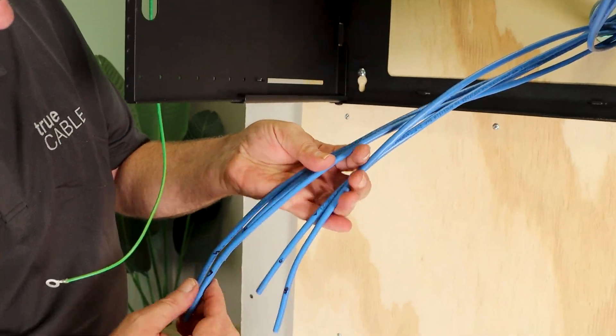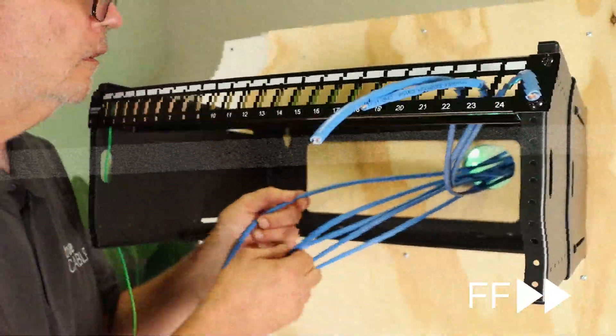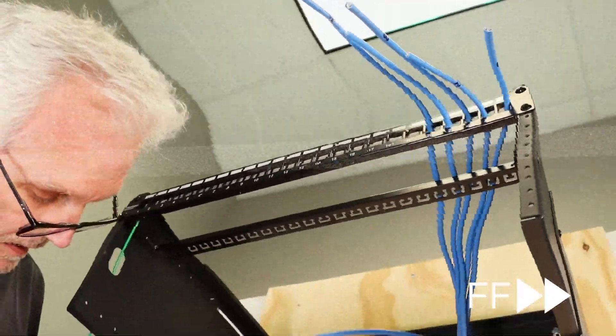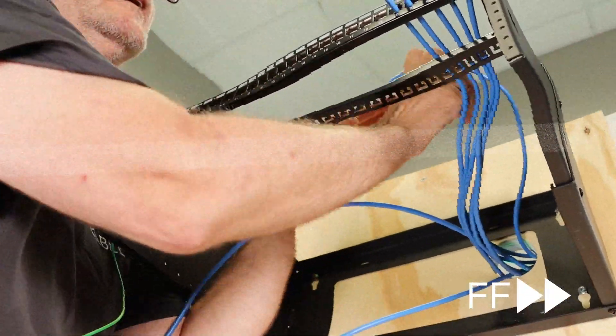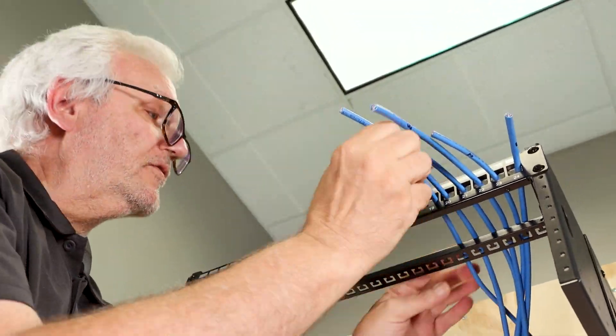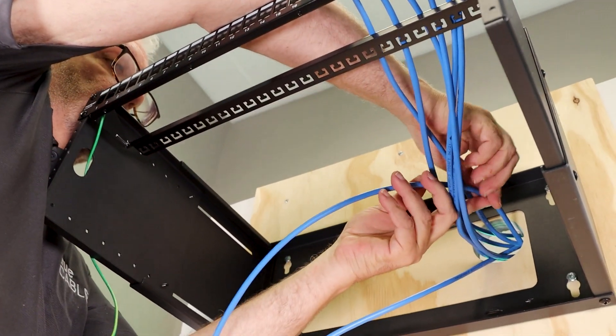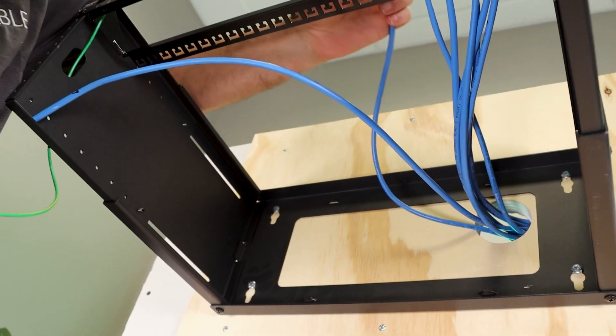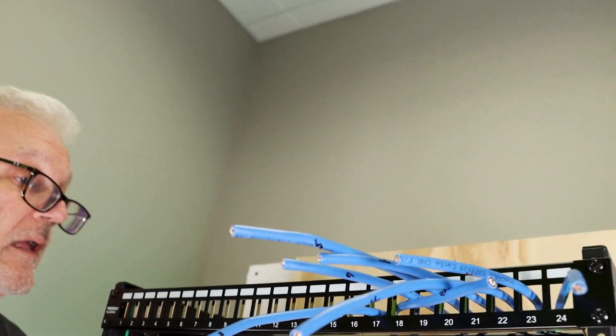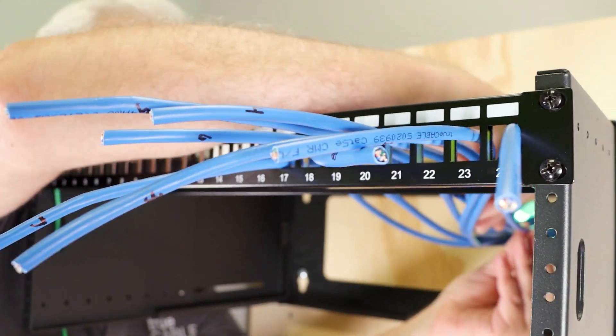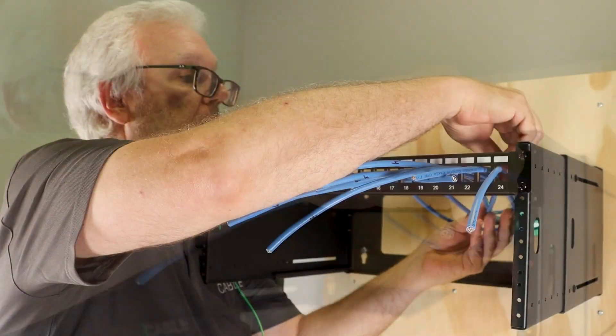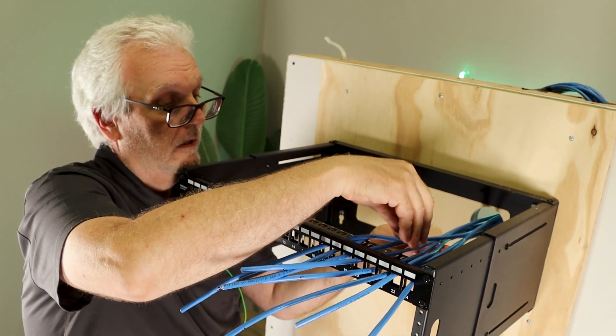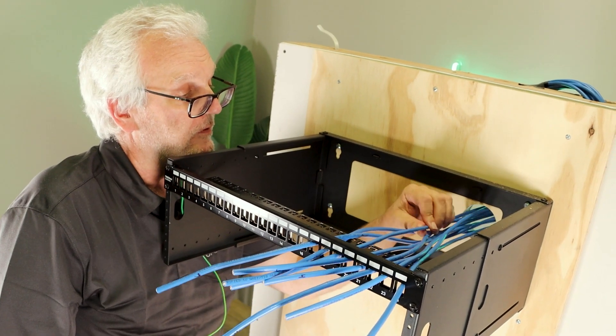And then we'll figure out what the lengths need to be. So as I'm pulling these through, I'm also making sure that they're not tangling up with each other back behind, to the best of my ability. So now they're in order and we'll want to take each one and make the distances about equal.